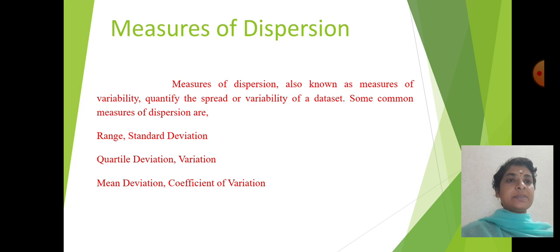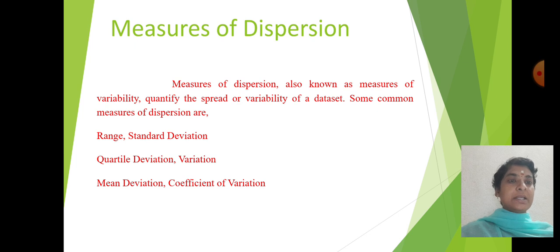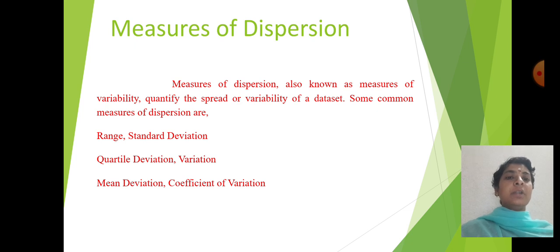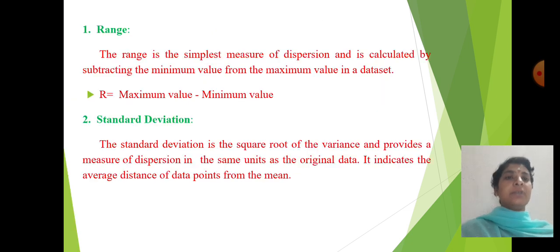Measures of dispersion, also known as Measures of Variability, quantify the spread or variability of a data set. Some common methods of dispersions are range, standard deviation, quartile deviation, variation, mean deviation, and coefficient of variation.